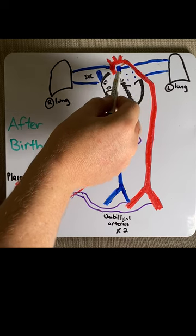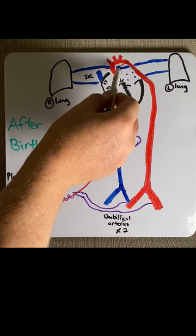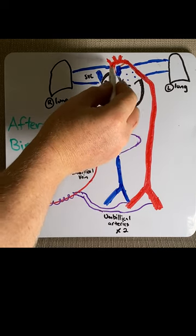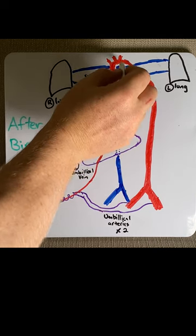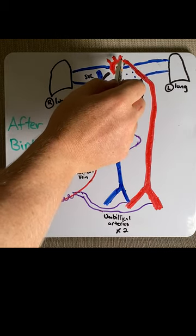Therefore, blood wants to go across the ductus arteriosus back into the pulmonary trunk. Now, because this blood is higher in oxygenation, it causes that ductus to close, which in the adult is the ligamentum arteriosum.